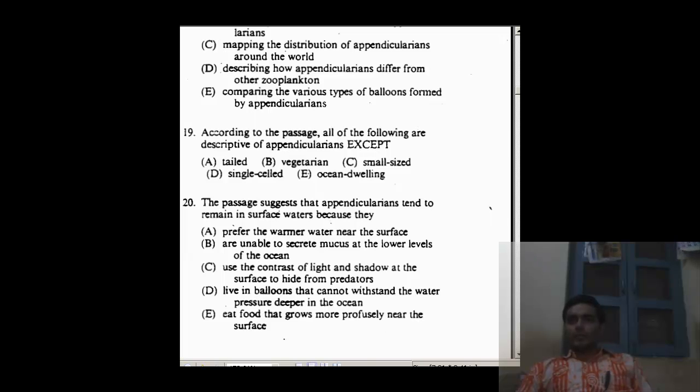Let us look at the 19th one now. According to the passage, all of the following are descriptive of appendicularians except. Now we have to go to the thing, but even if we don't go, let's look at common sense and try to eliminate. What I have been talking to you in the few classes is that you have to use the power of elimination, not the power of selection. You don't have to go to the RC again. You have to eliminate some very stupid looking options and use all your techniques of elimination.